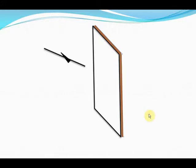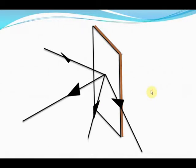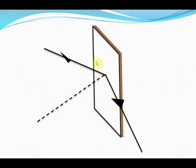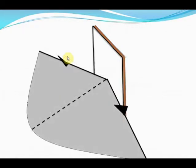This is the angle of incidence and this is the angle of reflection — they are both the same. The second law of reflection states that the incident ray, the reflected ray, and the normal are in the same plane. Let's say an incident ray is coming like this — in which direction will the reflected ray be? The reflected ray will be such that the reflected ray, the incident ray, and the normal are all in the same plane. This is the second law of reflection.